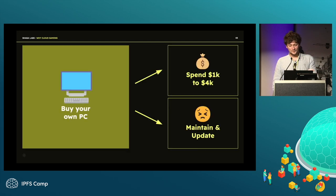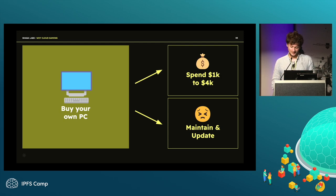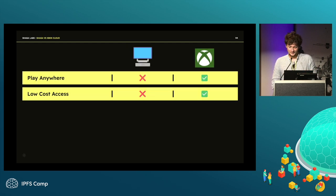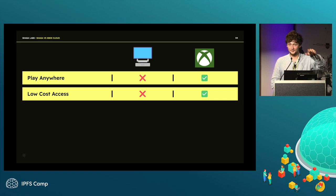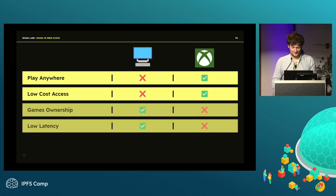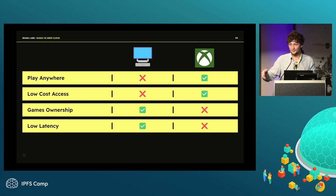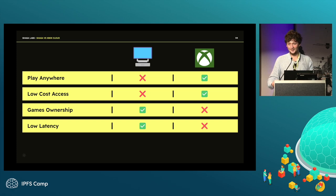When people buy PCs they spend between one thousand and four thousand dollars, and then need to maintain and update the device. That's why a lot of people started using Xbox Cloud — you can play anywhere with low-cost access to a library of games. But the issue is you don't have ownership over these games. There are stories of people who bought a game and Steam removed it from the library.